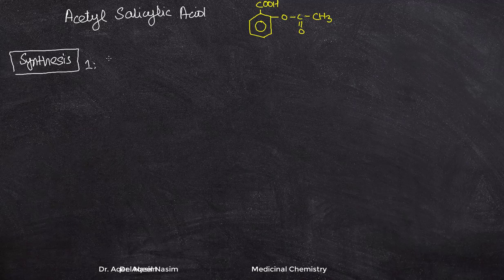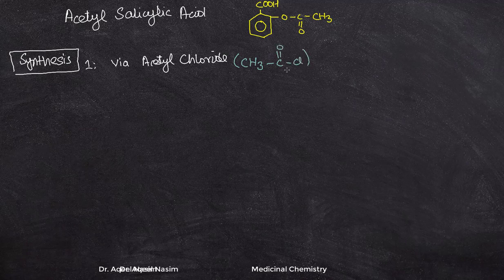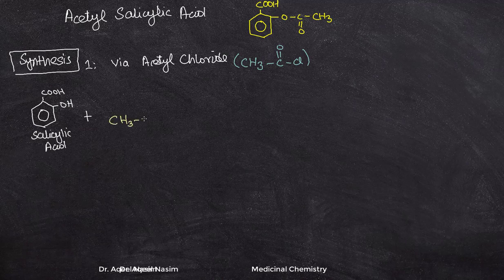The first pathway for the synthesis of aspirin is via acetyl chloride. Acetyl chloride has the structure CH₃C(=O)Cl. The starting point for synthesis is salicylic acid along with acetyl chloride (CH₃C(=O)Cl) in the presence of pyridine and glacial acetic acid.